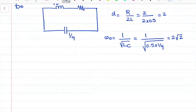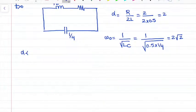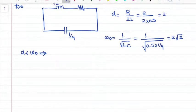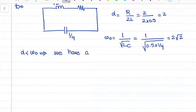Clearly alpha is less than omega_0, so from here we can conclude that the circuit is underdamped. It means that we have an underdamped response.